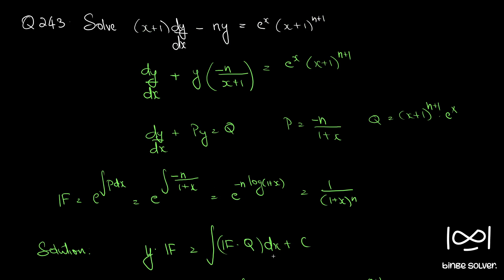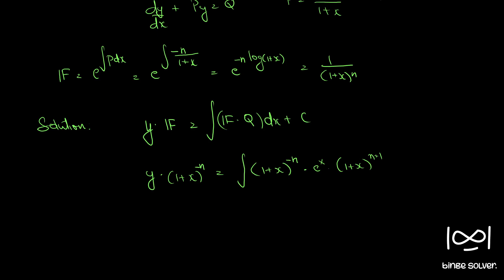I made a mistake here — when you divide throughout by (1+x), the exponent becomes n, not n+1. So here it is n. The (1+x)^(minus n) and (1+x)^n cancel, and we have the integral of e^x.